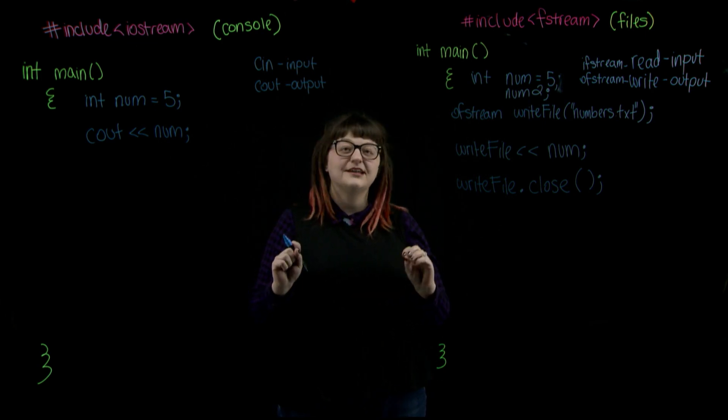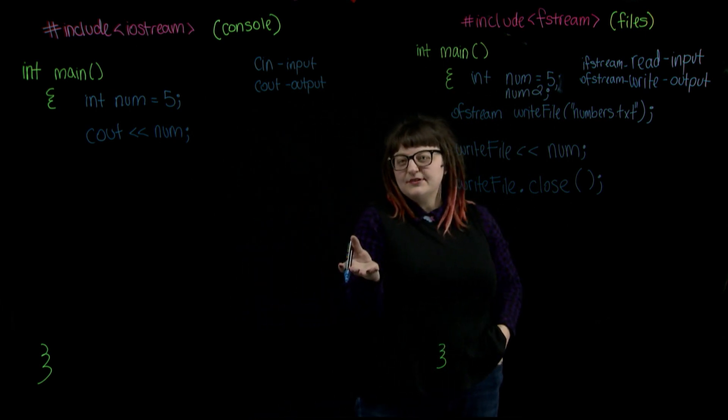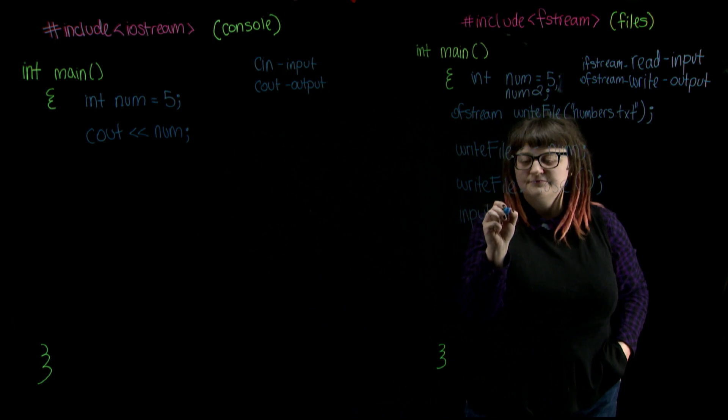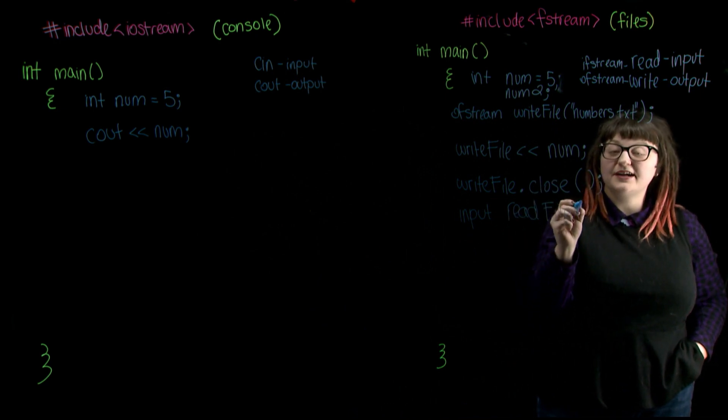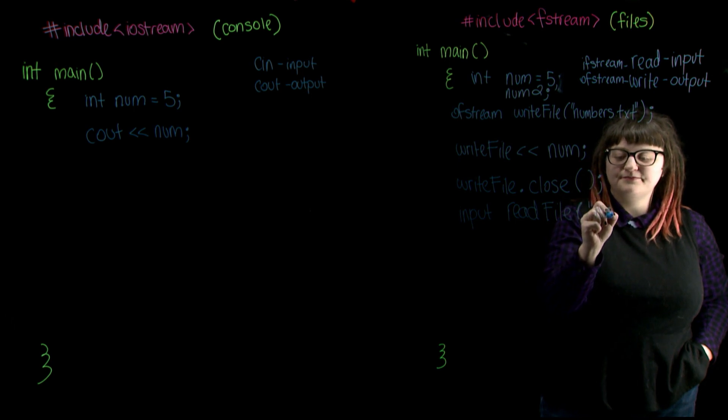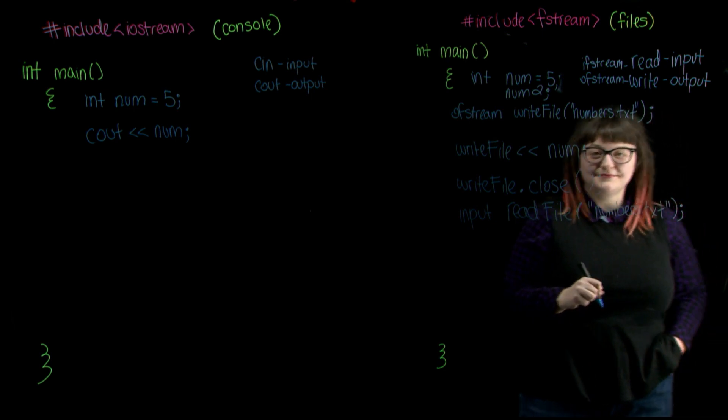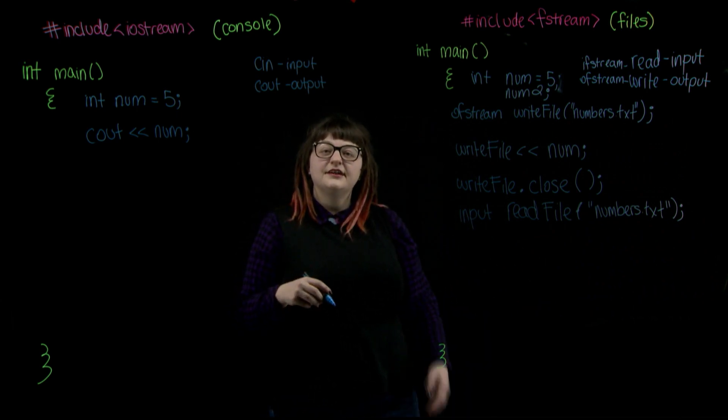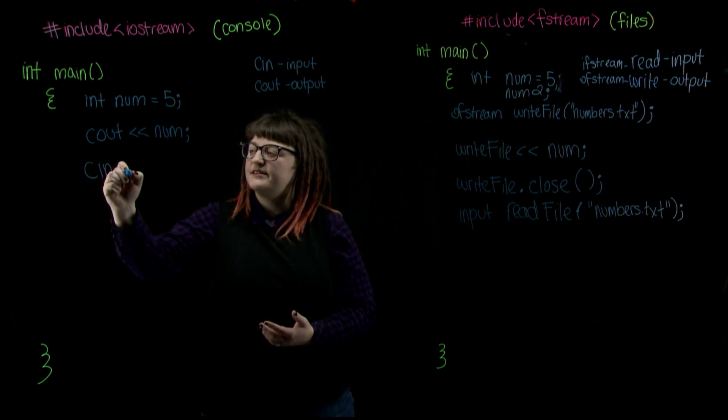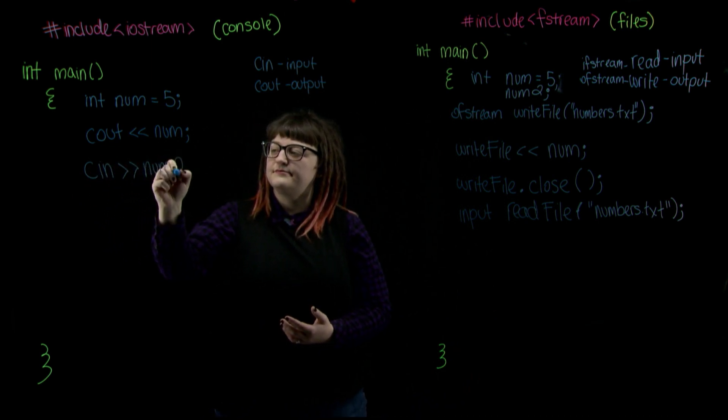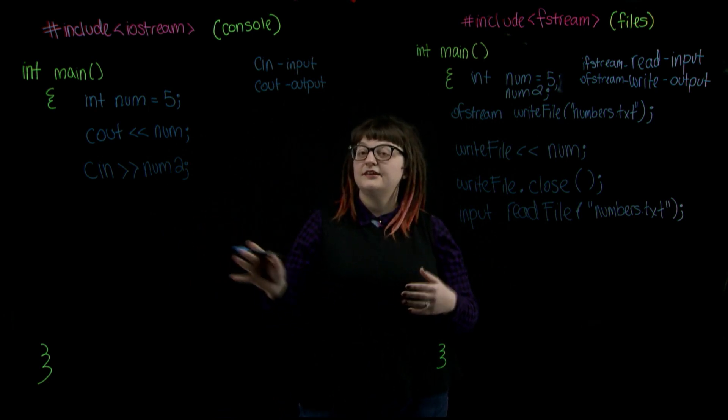Pop quiz, what object type are we going to need to declare this as? An ifstream file object, I for input, right? Let's call this one readFile. Again, when we're declaring our file object, we need to tell our compiler what to reference. We want our numbers file. Numbers.txt. Now, if we were just using our console to get the value for num2, we would just use a cin command, right? But since we're using a file, what do we need to do? We replace the cin with our file object. But the syntax remains the same.